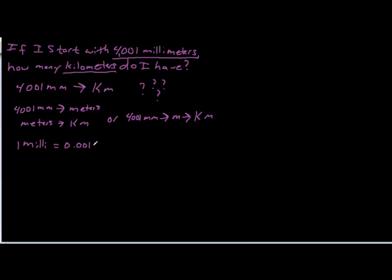We're going to use the milli conversion, which is one milli equals 0.001 of something, or in this case, one millimeter is 0.001 meters. And we're going to create our fractions, both of them. Here we go. This is what they look like.